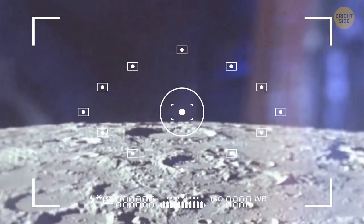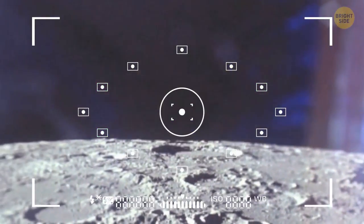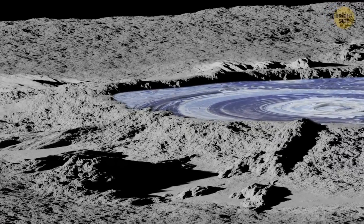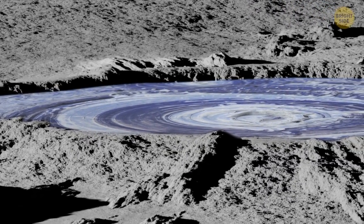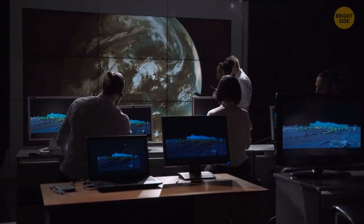Before powering Chang'e-4 down, the scientists are looking through the pictures taken by the rover's main camera. That's when they spot it, a small crater filled with something that looks shockingly different from the surrounding landscape. Unable to identify the gel-like substance, the team orders the rover to check this bizarre finding.